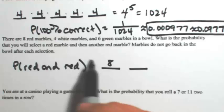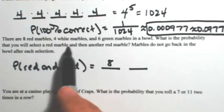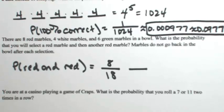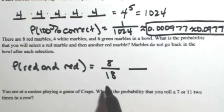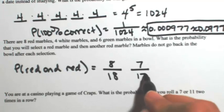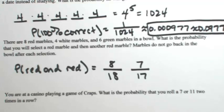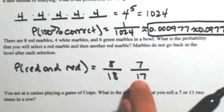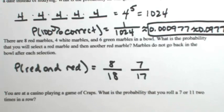We have eight, four, and six marbles in the bowl, so there are 18 marbles total. Since the marbles do not go back in after each selection, once I take that red one out, it's gone — so now there are only seven red ones left. And there are only 17 total marbles remaining. So this is an example of dependent events, because one does depend on the next. By taking that red marble out, you affected the next probability.